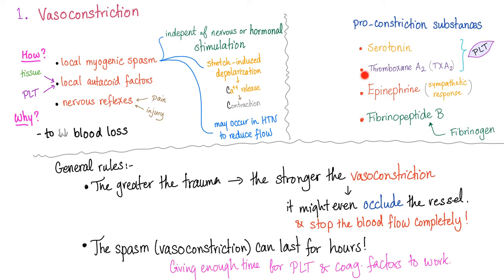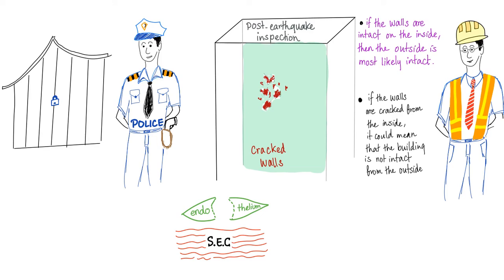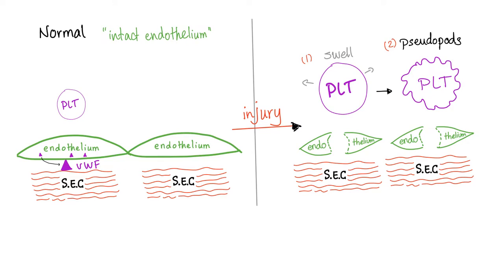Vasoconstriction — we have some factors that are pro-constriction: serotonin, thromboxane, epinephrine, and fibrinopeptide B. Like a security gate that is safe and secure, with the layer underneath not exposed — everything is fine. When the endothelium is cracked and the underneath layer, the subendothelial collagen, starts to be exposed, we have a problem.